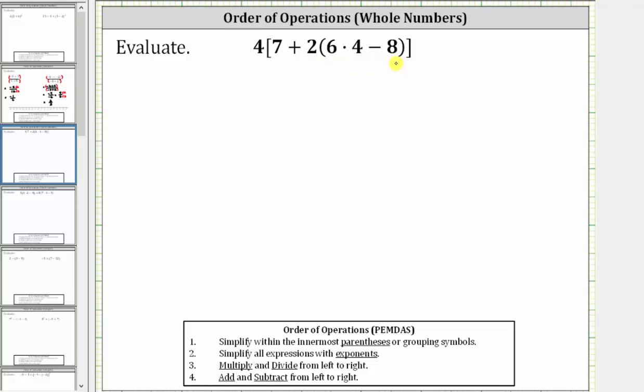But the innermost grouping symbols are the inner parentheses here. Notice within the parentheses, we have multiplication as well as subtraction. And since we multiply and divide before we add and subtract, the first step is to determine the product in the parentheses.